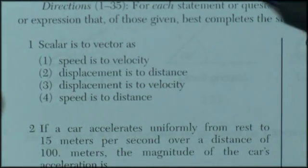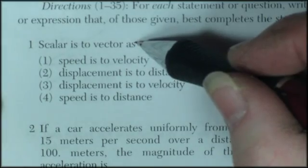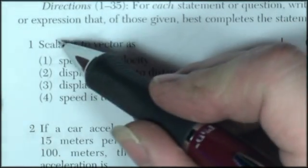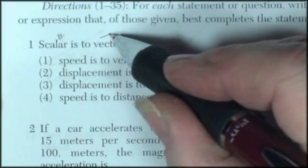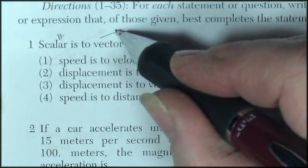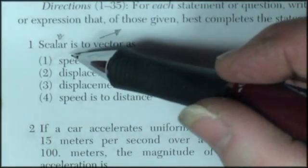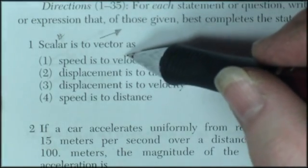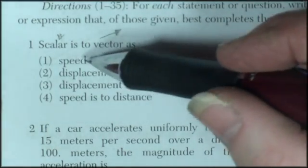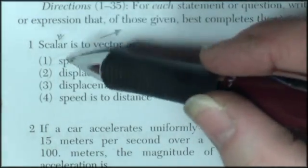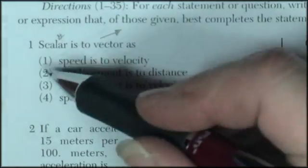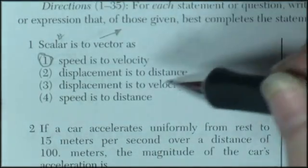Question one. Scalar is to vector. Well, scalar is a concept that just has the number. A vector is that number with direction. So they're looking for the number and then the component that would be a vector. So speed is to velocity. Speed is a scalar, velocity is the vector. That would be the right answer.